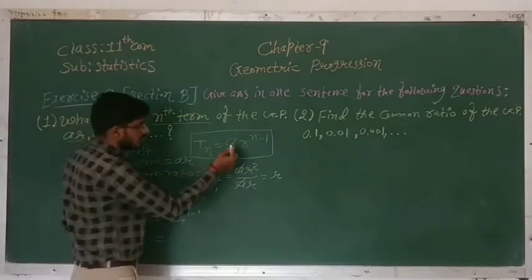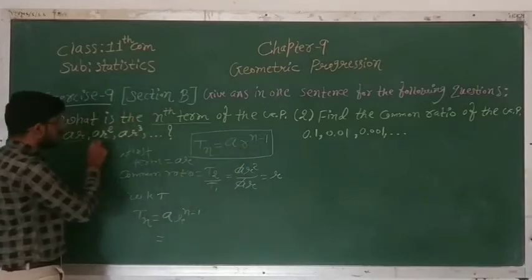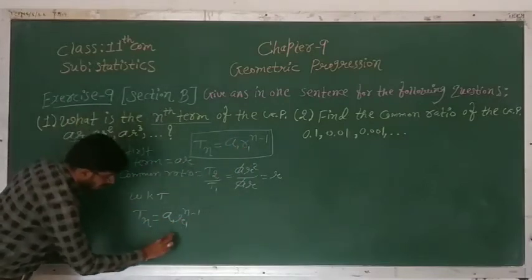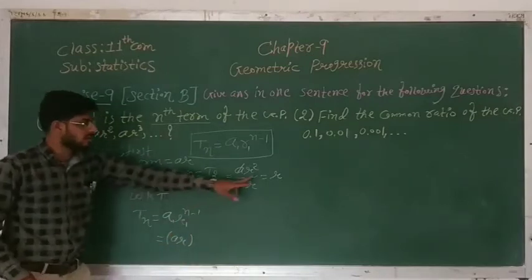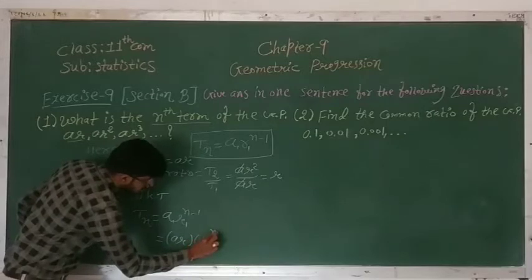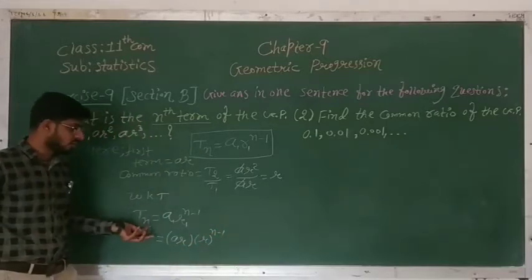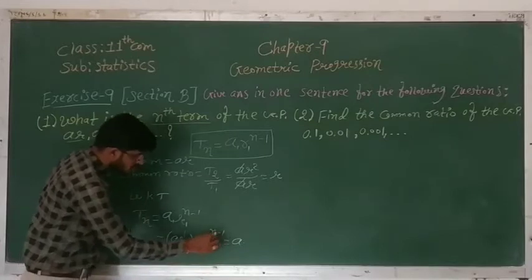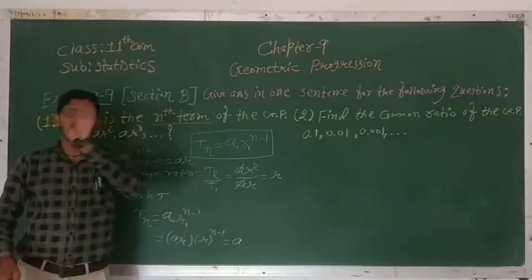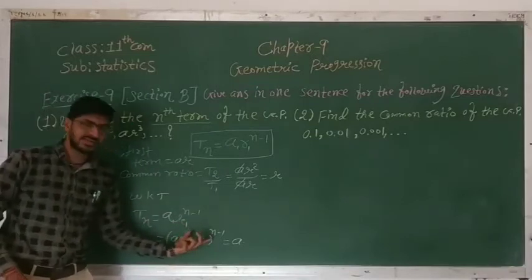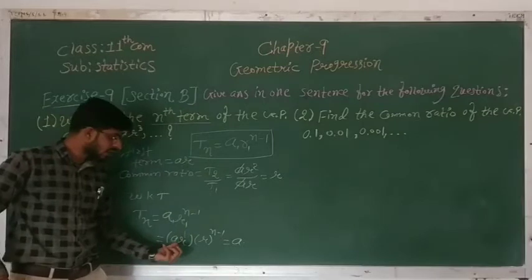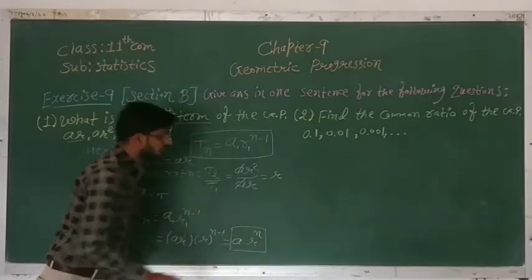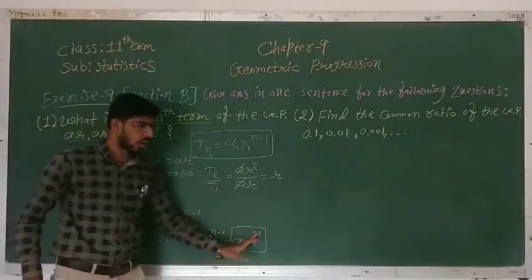We use A1 and R1 to avoid confusion since A and R already appear in the sequence. So A1 is AR and R1 (common ratio) is R. Substituting: A1 into R1 raised to N minus 1 gives AR into R raised to N minus 1. This simplifies to A into R raised to N. So the nth term of the given GP is A·R^N.